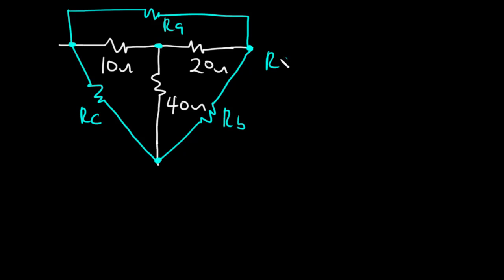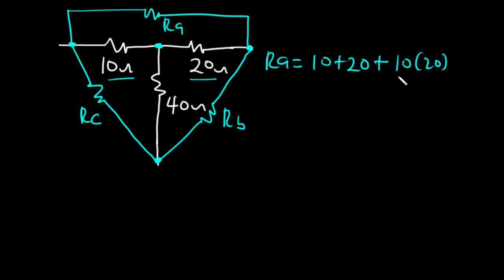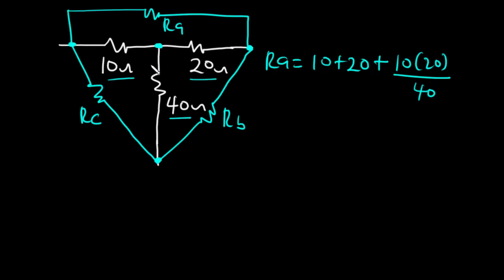To solve for Ra, it is going to be 10 plus 20 plus the product of 10 and 20 divided by 40. Essentially, when converting from star to delta, for each delta resistor you take the sum of the two inner resistors plus their product divided by the outer resistor. So Ra is 10 plus 20 plus (10 times 20) divided by 40, which equals 35 ohms.